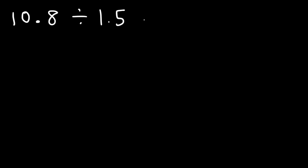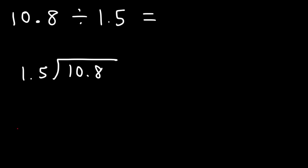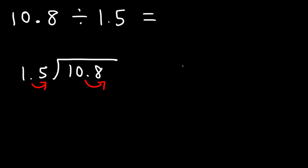Now let's work on another example: 10.8 divided by 1.5. Feel free to pause the video and try that problem. So 1.5 belongs on the outside and 10.8 on the inside. Let's move the decimal point one unit to the right for each number — it has to be the same for both. The problem becomes 15 on the outside and 108 on the inside.